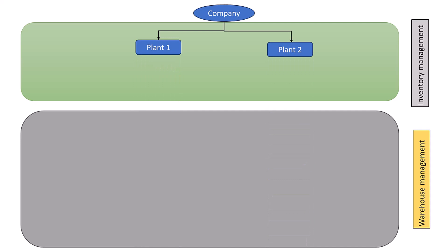The next structure is the plant. A plant is an organization unit used to represent a physical location where business activities related to production, procurement, and inventory management take place.